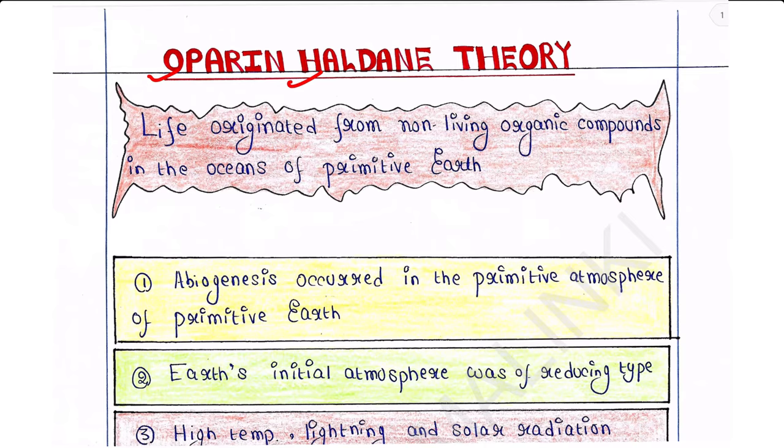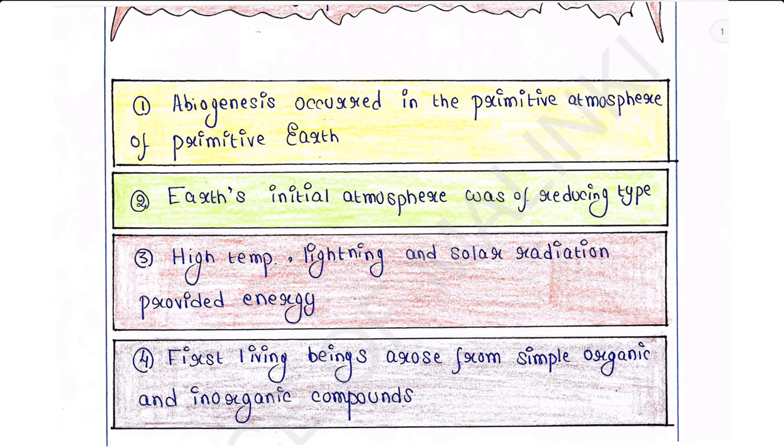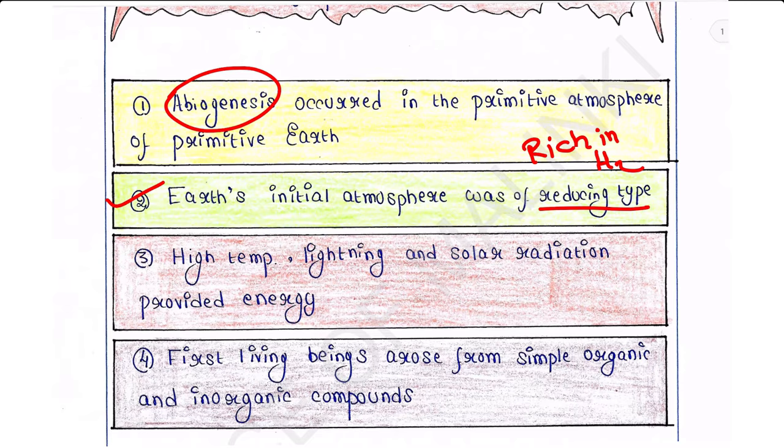According to them, spontaneous generation of life, called abiogenesis, is not possible under present conditions but could have occurred under the conditions prevailing in the primitive atmosphere of primitive Earth. The condition of Earth was totally different at that time. Earth's initial atmosphere was of reducing type, rich in hydrogen and very low in oxygen, much different from present day oxidizing atmosphere.